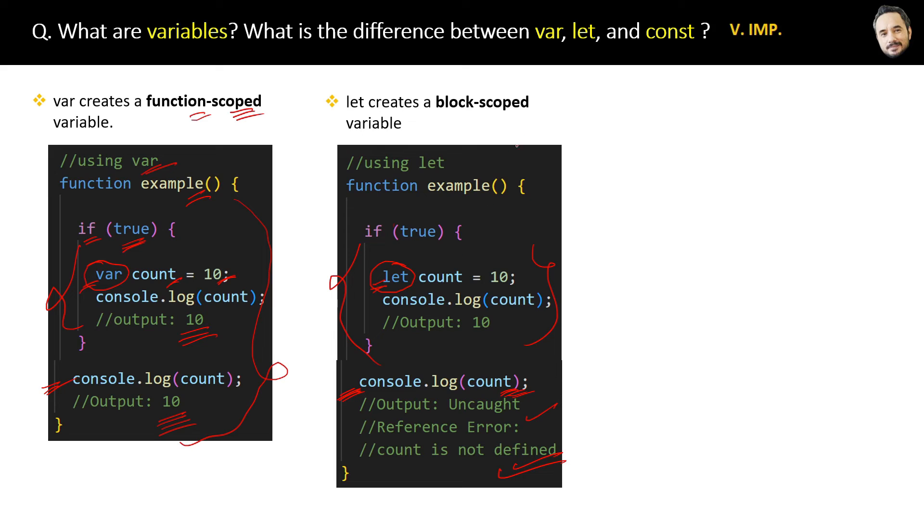The reason is let creates a block-scoped variable, not a function-scoped variable. Therefore the variable will be available inside the same block in which it is defined, inside the curly braces. This keyword let is more popular because it will not create confusion about the scope of the variable.